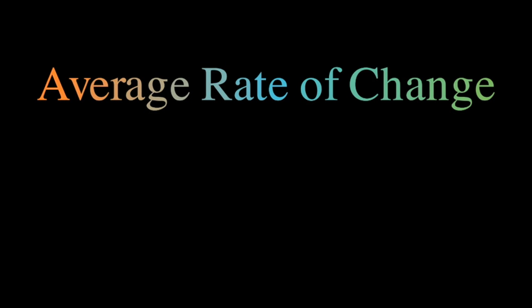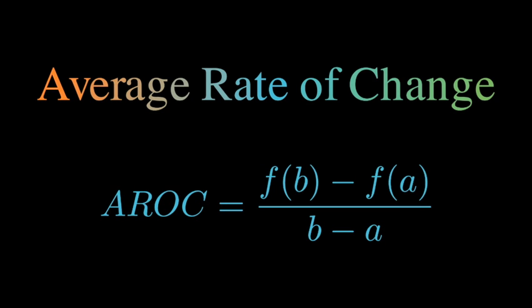In this video, we're going to be discussing how to find the average rate of change for a function. Average rate of change is often abbreviated AROC, and AROC is equal to f of b minus f of a over b minus a.